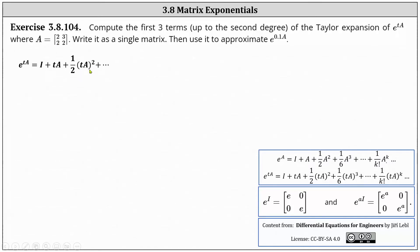Next, we substitute matrix A into the equation. Also notice 1/2 times the square of TA results in T squared divided by two times the square of matrix A.